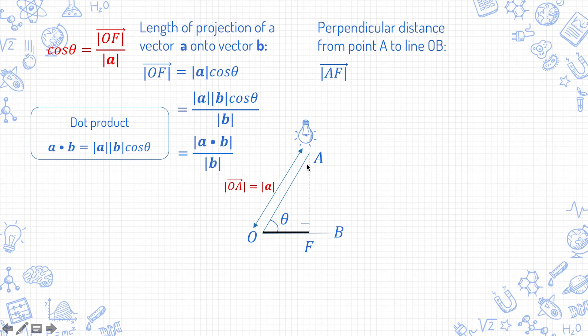Take some time to pause and process this if you need. On the other hand, sin theta equals to mod AF over mod a, so sin theta equals mod AF over mod a, which can be rearranged to mod AF equals mod a sin theta.